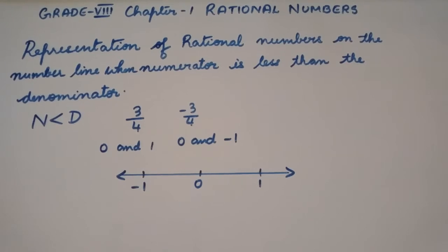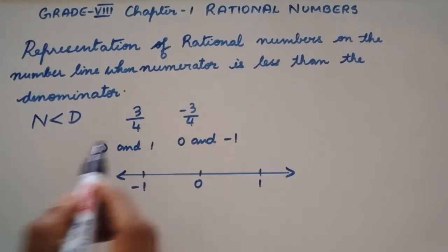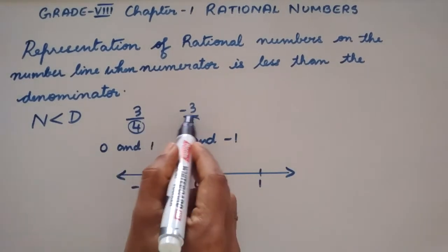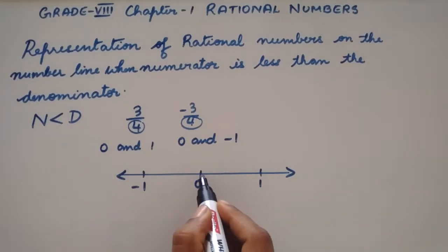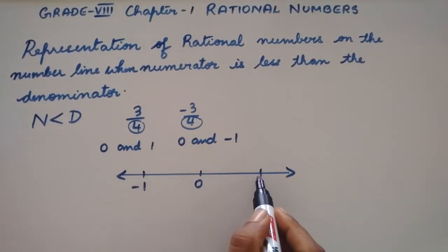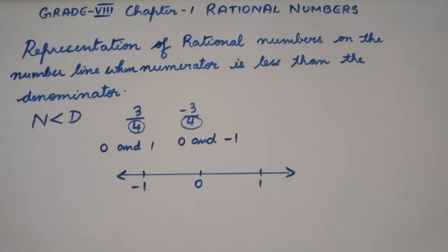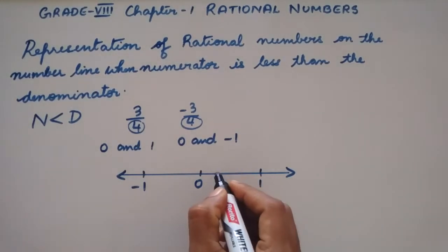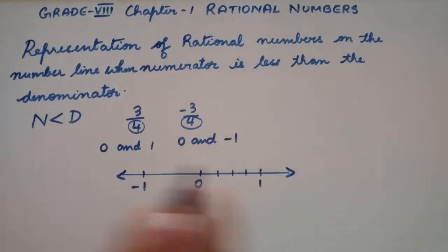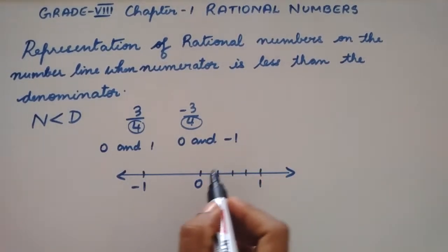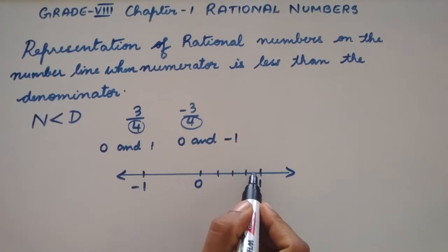Remember students, the denominator tells us the number of equal parts. Now since the denominator is 4, we divide the length between 0 and 1 into 4 equal parts. Draw 3 lines which gives us 4 equal parts.